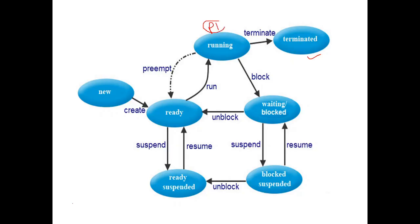Now let us see the terminated state. Suppose process P1 is running — it is being executed by the CPU and is in the running state. When it finishes its execution, it comes to the terminated state. So after the running state, when a process fully finishes execution, it will be automatically moved to the terminated state.